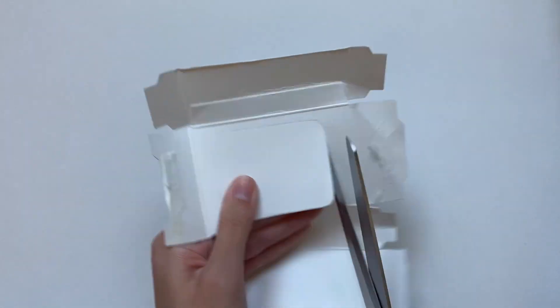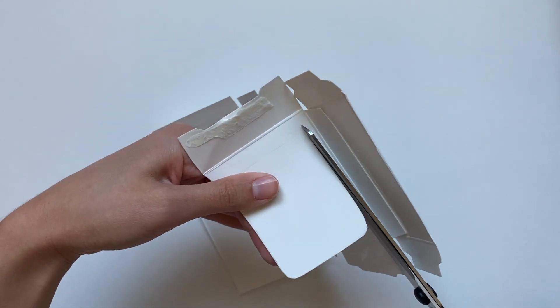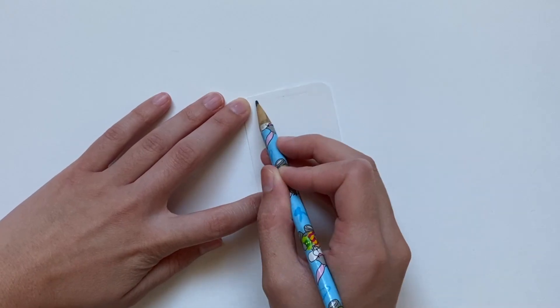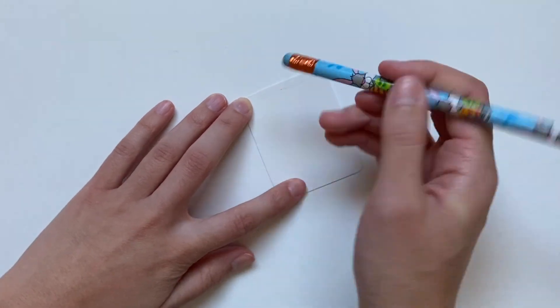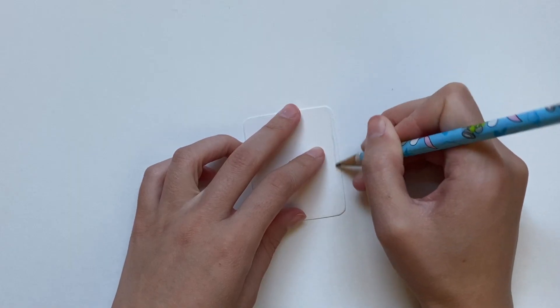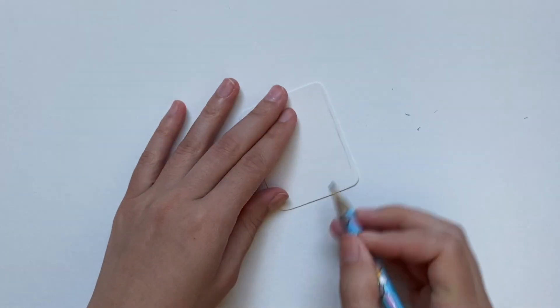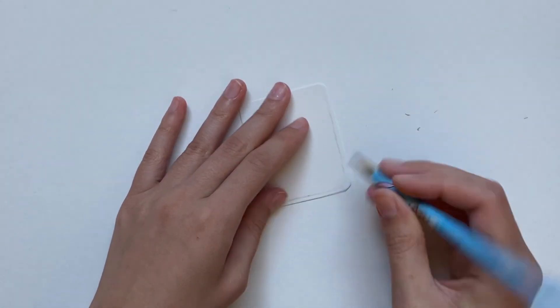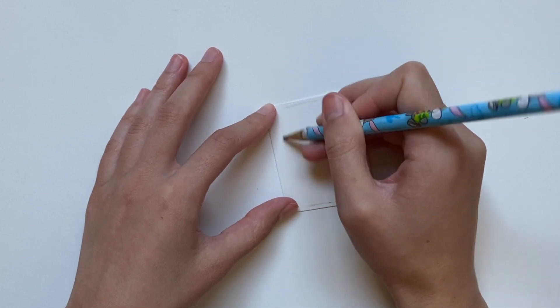After cutting this out, I'm going to start sketching out the outline of the actual iPad because this entire piece doesn't just include the iPad, it includes that space on the side for the pencil. So I'm just drawing a smaller rectangle within that with rounded corners and leaving a little bit of space on the side.